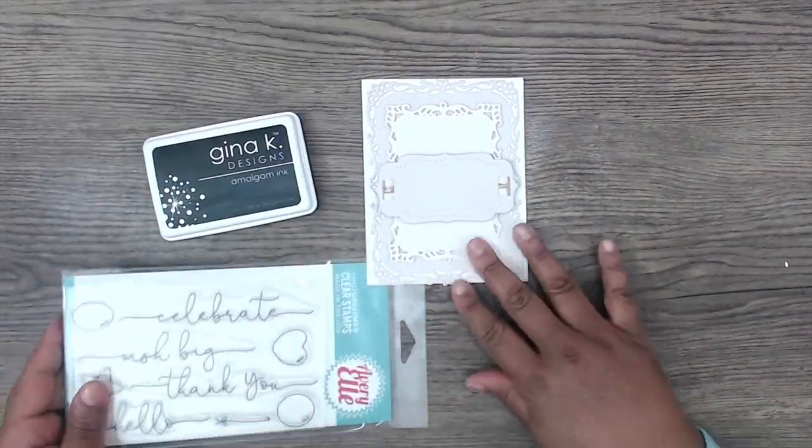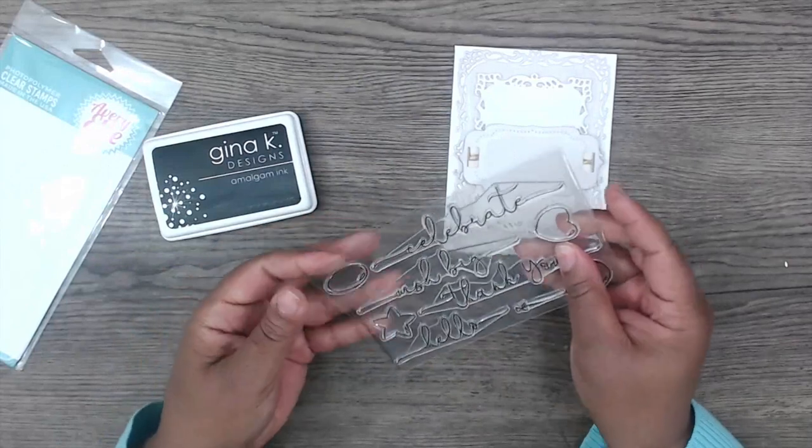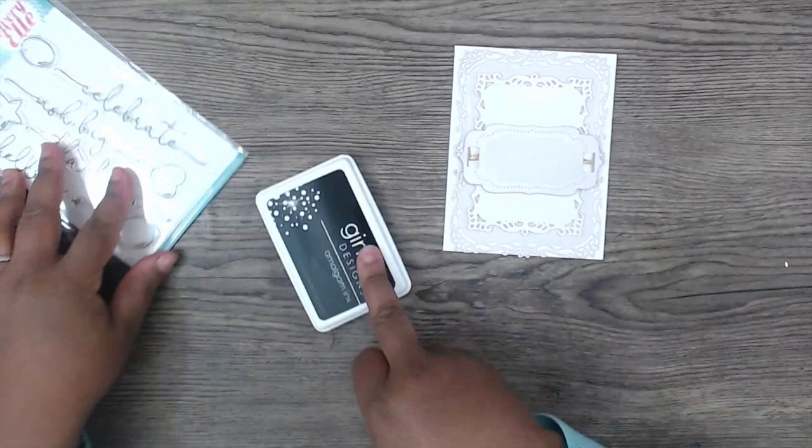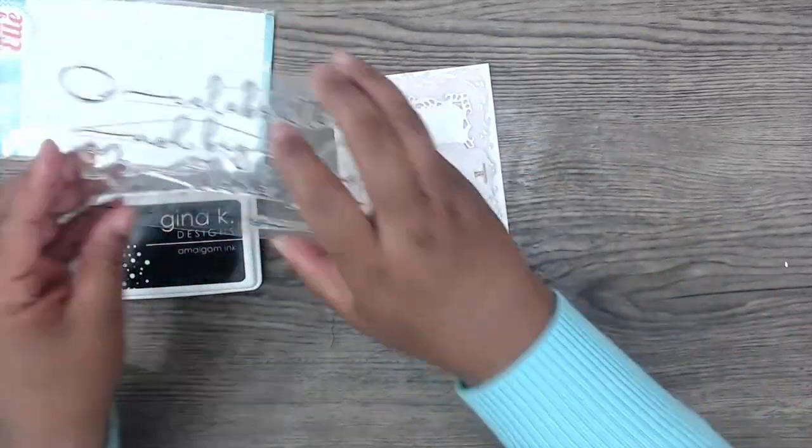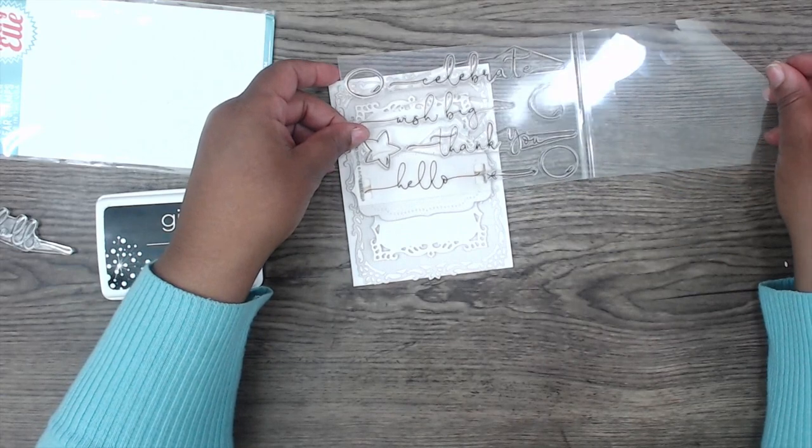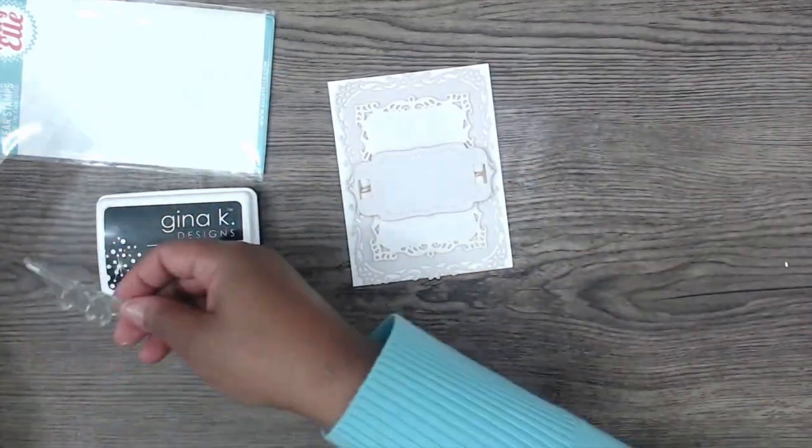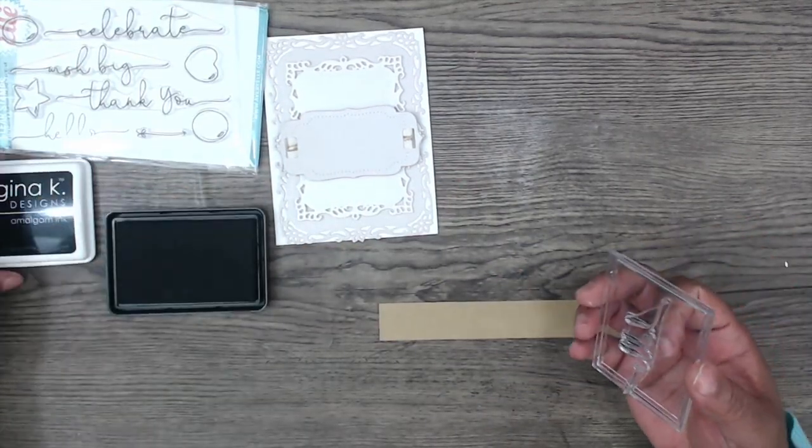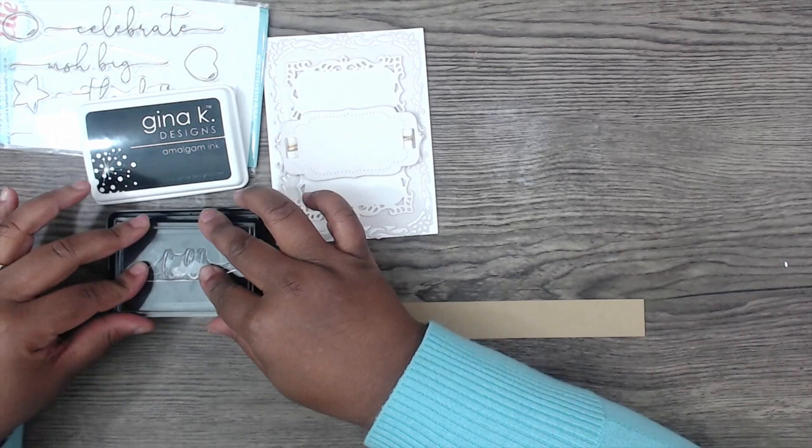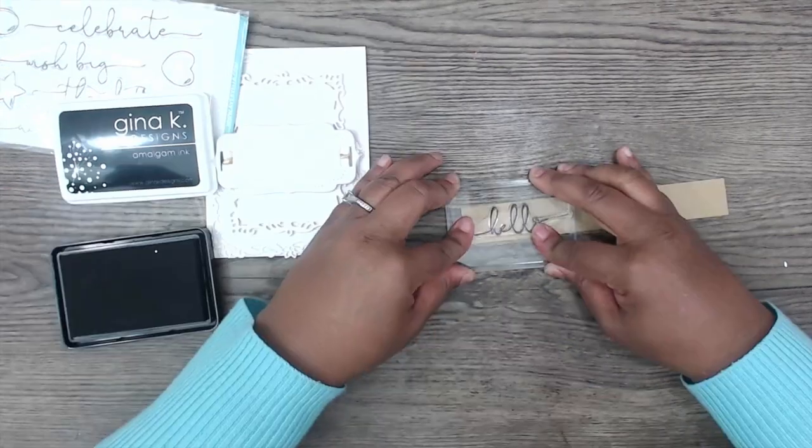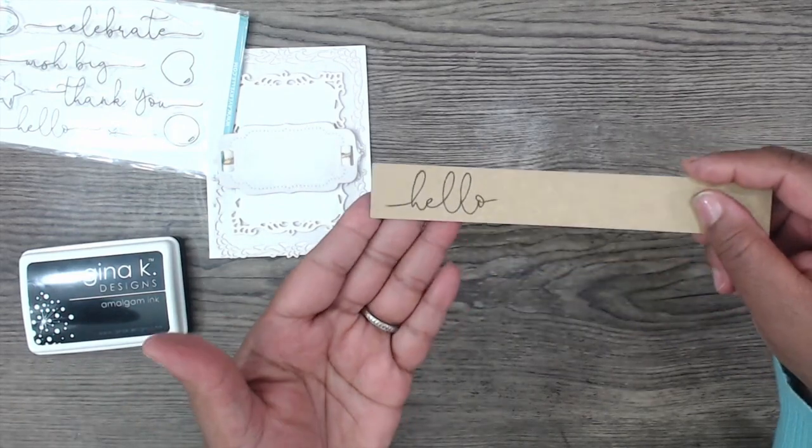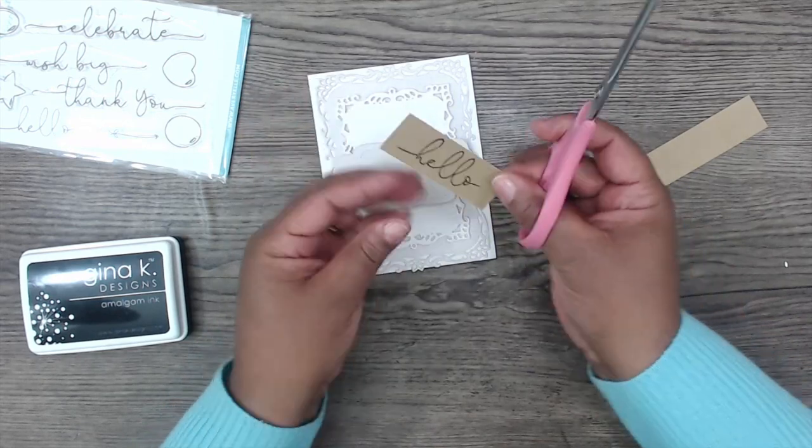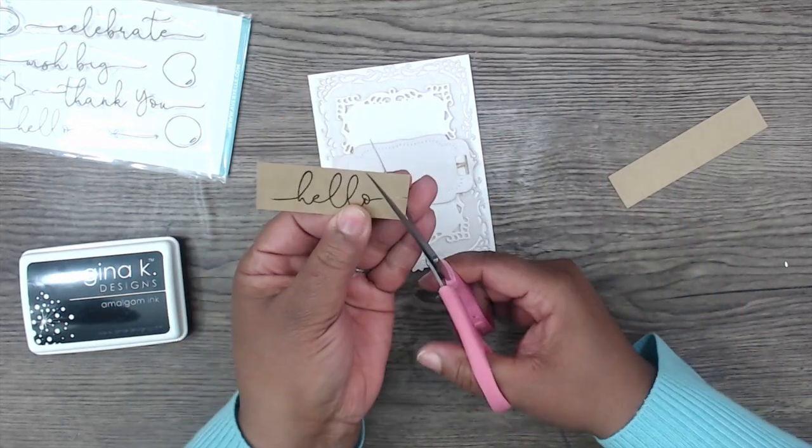Now it's time to do a little bit of stamping. I'm taking the Floating Wishes Avery Elle stamp set and I'm going to use the word hello. This hello is a beautifully written script. The hello ends are a little bit longer. So a trick if you don't want to cut your stamp down is to stamp it and then wipe off where you don't want the ink to be. I'm using the Gina K Designs Amalgam Ink and I've wiped off the edges. I'm just going to add some fishtails to both ends and add that to the center of my label.